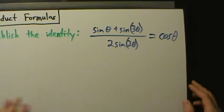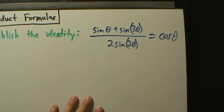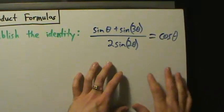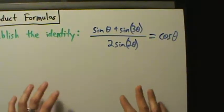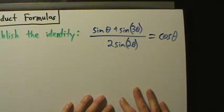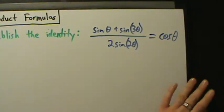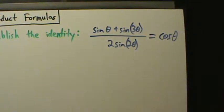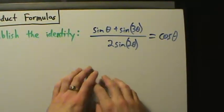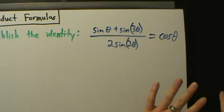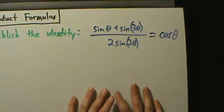Remember there were some guidelines to follow for establishing identities. The thing you always want to do in every established identity problem: just start on one side. Pick one side, only work on just that side, and leave the other side completely alone. Just manipulate it and try to make it look like the other side. Always leave the other side completely alone — no exceptions.